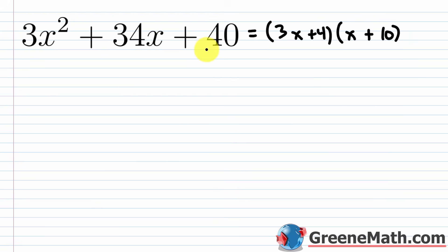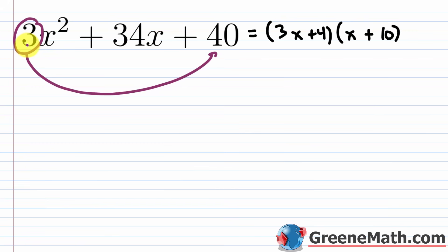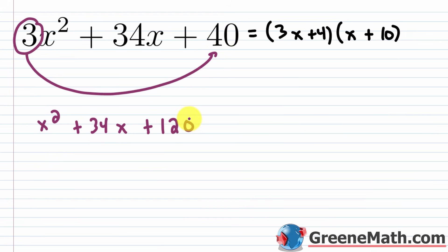Now the slide and divide method. The first step is to take the leading coefficient 3 and slide it down, changing the coefficient from 3 to 1. So we write x² + 34x + 120, where 120 is that ac product (3 × 40). Note: this expression is not equal to the original — the validity will be shown later with substitution.